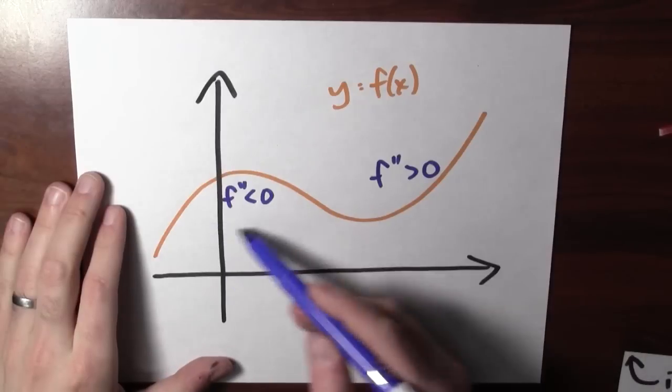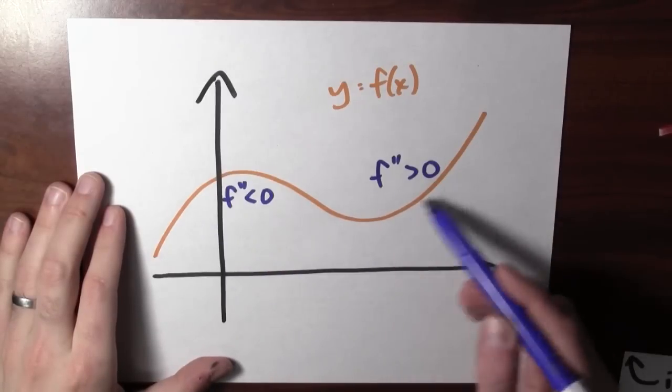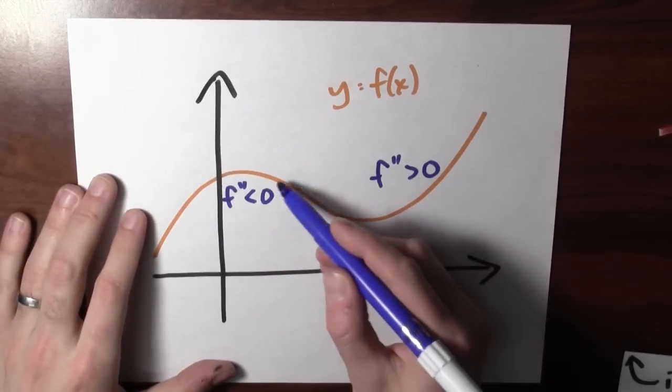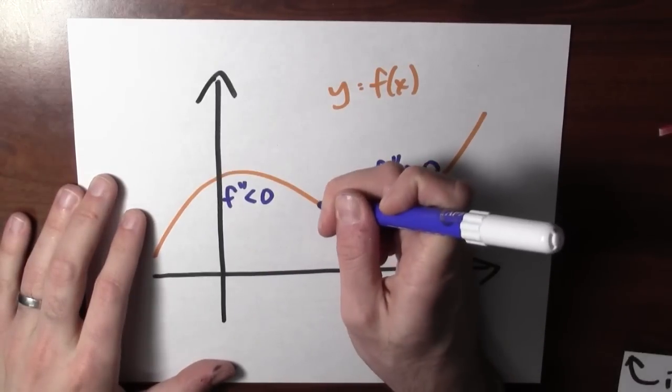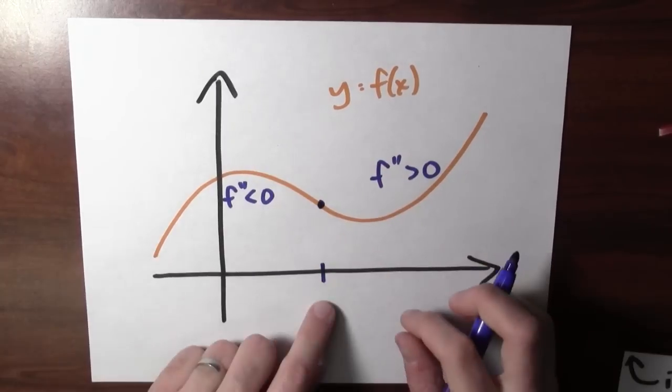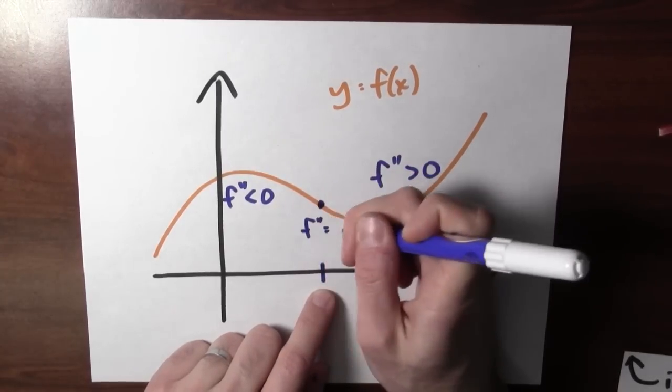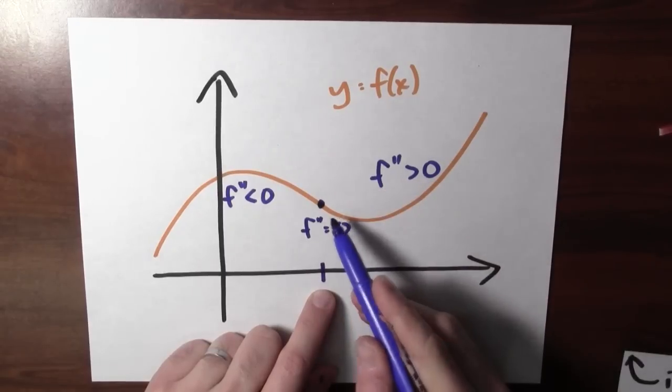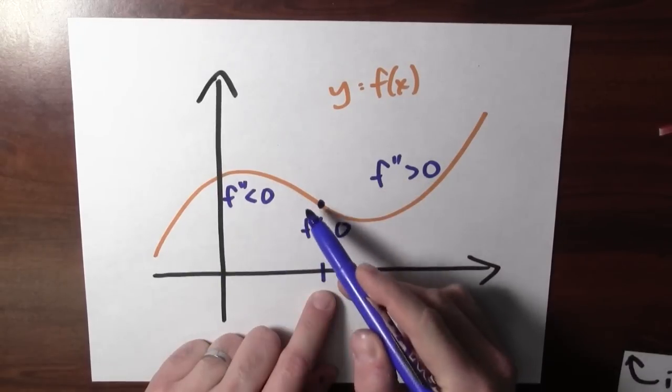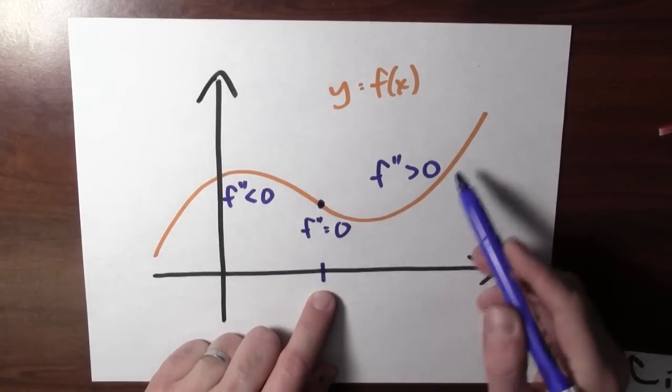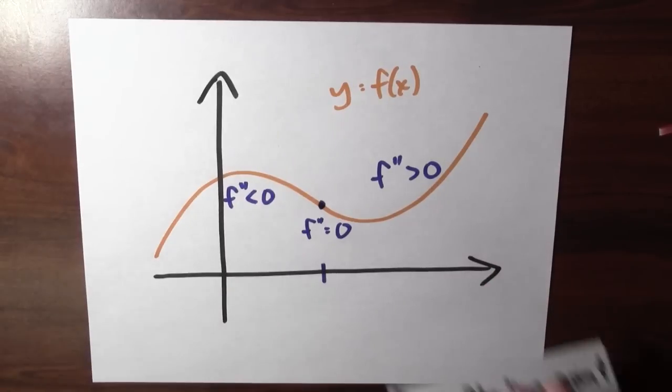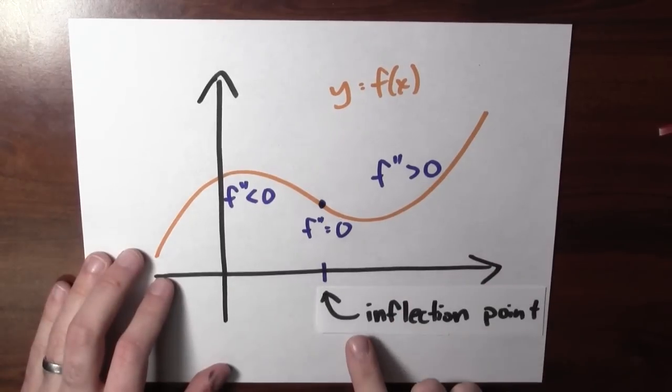What happens in between? Where does the regime change take place? So over here the second derivative is negative. Over here the second derivative is positive. There's a point in between. Maybe it's right here. And at that point, the second derivative is equal to zero. And on one side, it's concave down, and on the other side, it's concave up. A point where the concavity actually changes is called an inflection point.